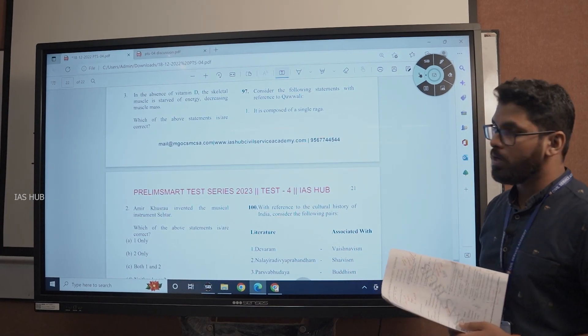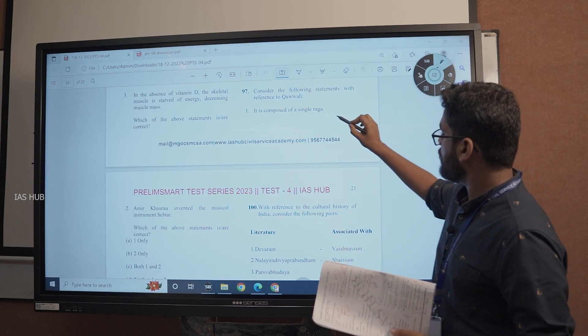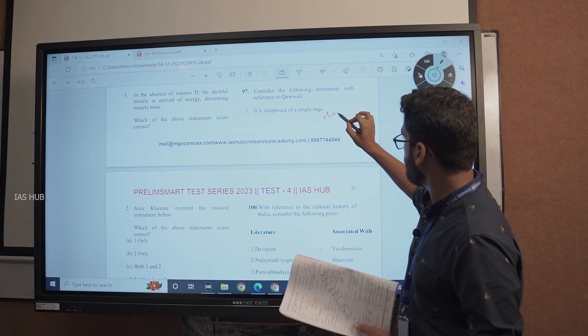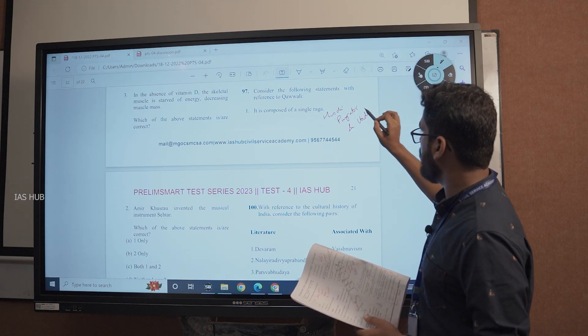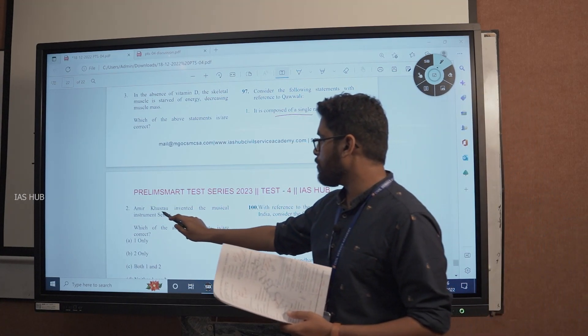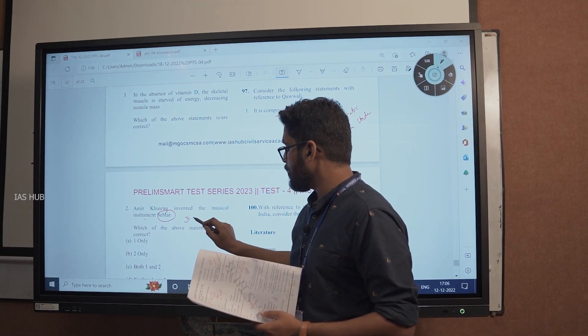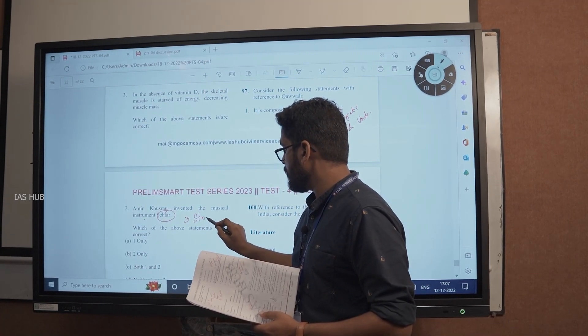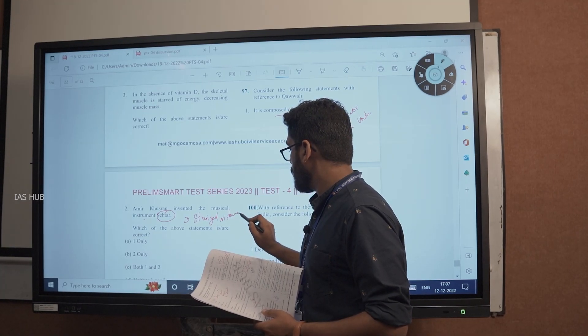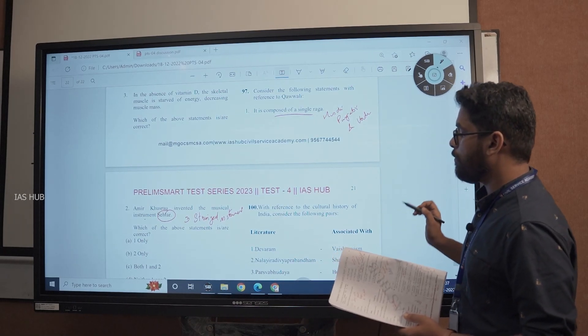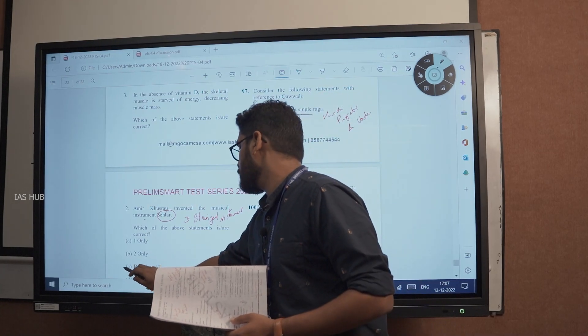Consider the following statements with reference to Qawwali. It is composed of a single raga. It is sung in Hindi, Punjabi and Urdu. Amir Khusrau invented the musical instrument Sehtar. It is a three stringed instrument. Which of the above statements are correct? Both the statements are correct actually. So option C, both 1 and 2.